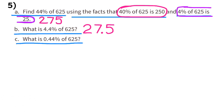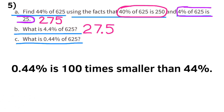C: What is 0.44% of 625? Since 0.44% is 100 times smaller than 44%, our answer is 100 times smaller than 275. So 0.44% of 625 is 2.75.